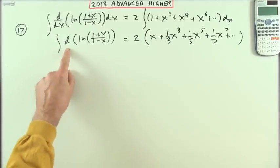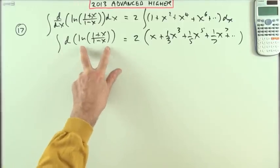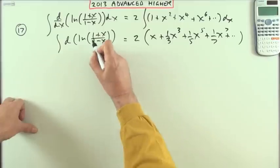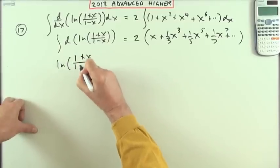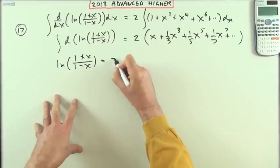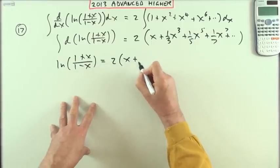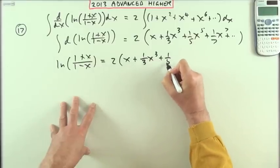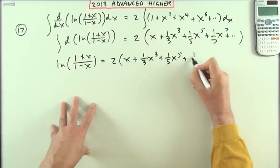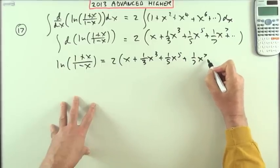Since the integral of the derivative of that particular term must go back to that term, I've finally got ln((1+x)/(1-x)) equals 2 times (x + x³/3 + x⁵/5 + x⁷/7 etc).